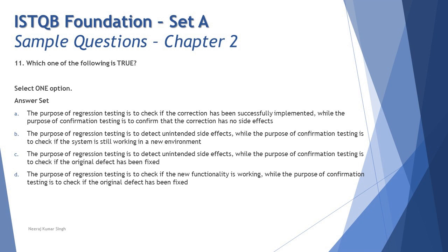Option C: the purpose of regression testing is to detect unintended side effects, while the purpose of confirmation testing is to check if the original defect has been fixed. This fits perfectly and gives us the correct definitions for both confirmation and regression testing.